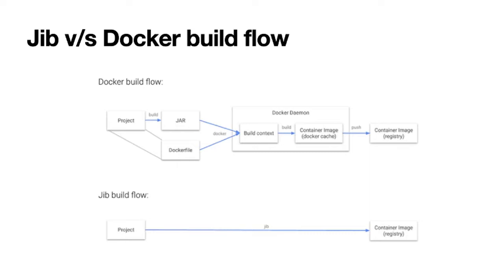This is your typical Jib versus Docker build flow. I'm not trying to compare these two technologies — my point is that Jib has a very straightforward, less complex approach. With Jib: you have a project, you add the plugin, and you get your containerized image pushed to a registry of your choice. With the Docker build flow, you need a Docker CLI, Docker daemon, you need to create the jar, write a Dockerfile with build instructions, then run docker build, docker push, and push it to a container registry.